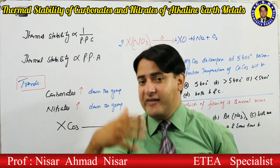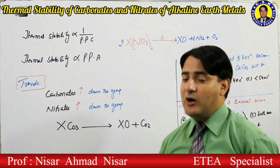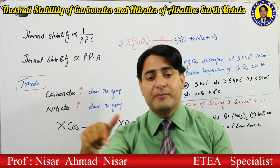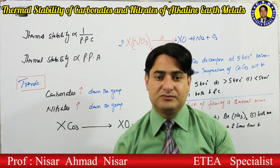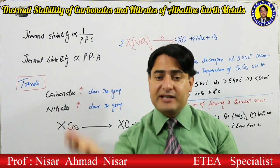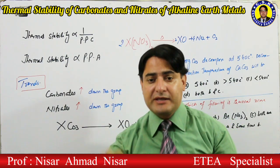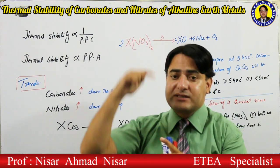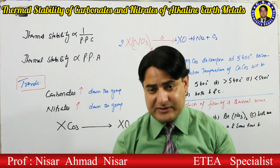The polarizing power of cation and anion depends on charge density. Charge density equals charge divided by size. Polarizing power and size are inversely related — as size increases, polarizing power decreases. So, a larger cation has less polarizing power, which means greater thermal stability of the compound.